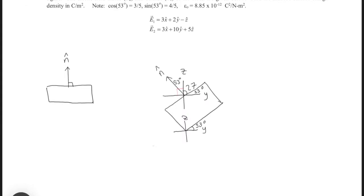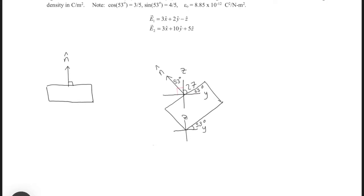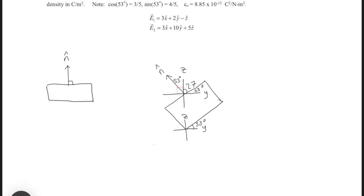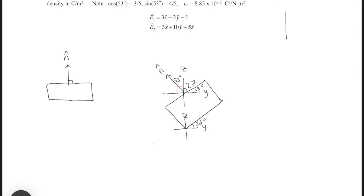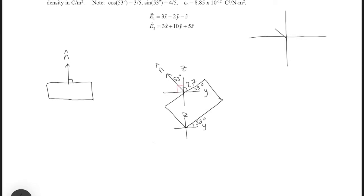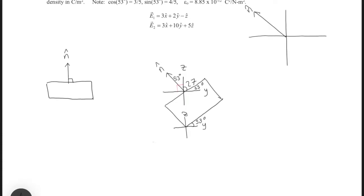Alright, so we know that the block is tilting at 53 degrees. So the n-normal, or the n̂, must be 53 degrees from that z-axis. So if I redraw our y-z-plane here, and I draw n̂ like this, this angle is 53 degrees.